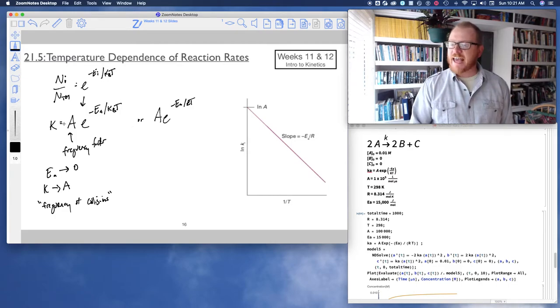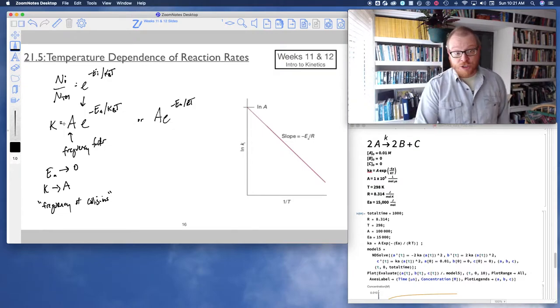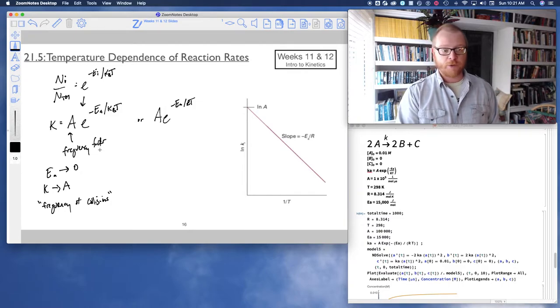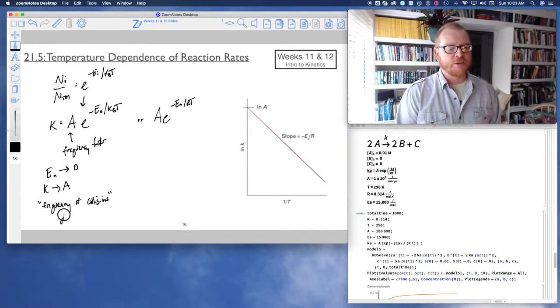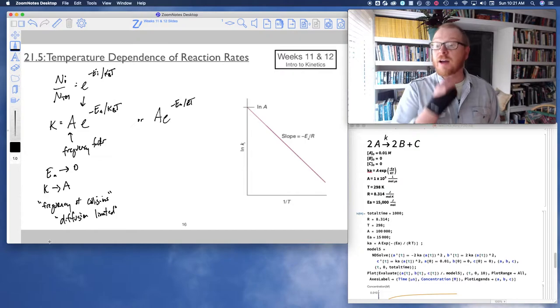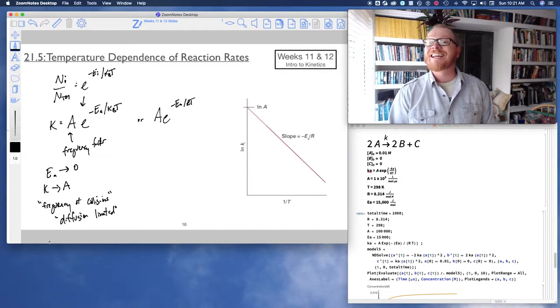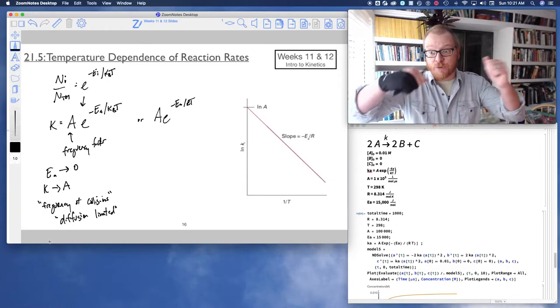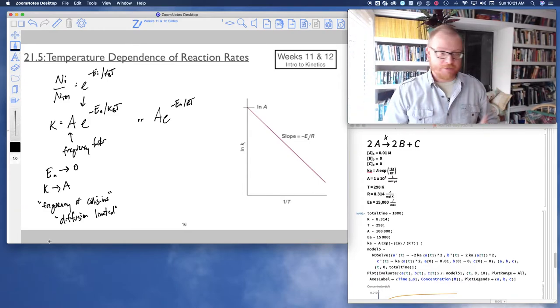But if either the temperature is very, very large—because one over temperature would make this tend to zero—or if the activation energy was very small, then k just proceeds at what we call diffusion limited. In other words, the only amount of time, which I will start referring to as the rate limiting step, is the amount of time it takes for the reactants to come together and react.